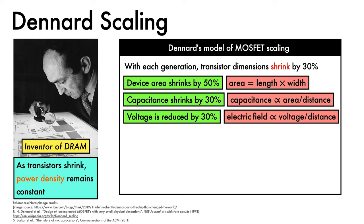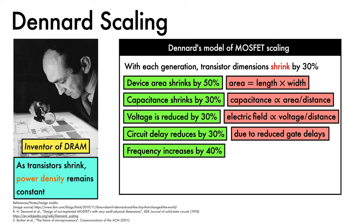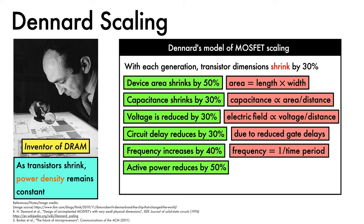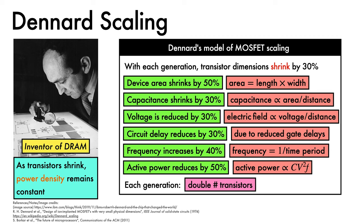Circuit delay also reduces by approximately 30% due to reduced gate delays, so frequency is increased by 40% since the time period is reduced. These combine such that active power reduces by 50%, thanks to its relationship to capacitance, voltage, and frequency. All of the above blend serendipitously so that each generation, the number of transistors on a given chip doubles, the power density stays the same, and the chip runs 40% faster. Glorious.